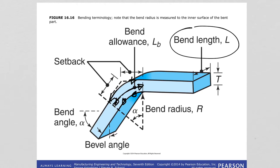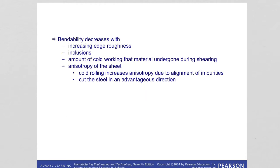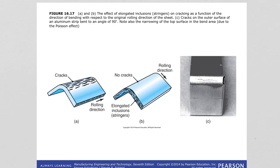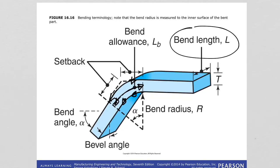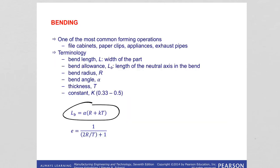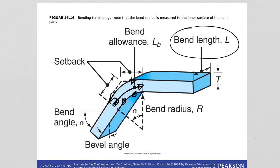Because the outside part is in tension, due to the Poisson effect — if one part is stretched, the width of the part has to get smaller because the volume is the same — this is also seen in the image where this part gets smaller compared to the original width. The bend allowance, which is the length of the neutral axis, can be calculated from this equation, which depends on the bend angle alpha, the bend radius R, a constant K, and the thickness T.